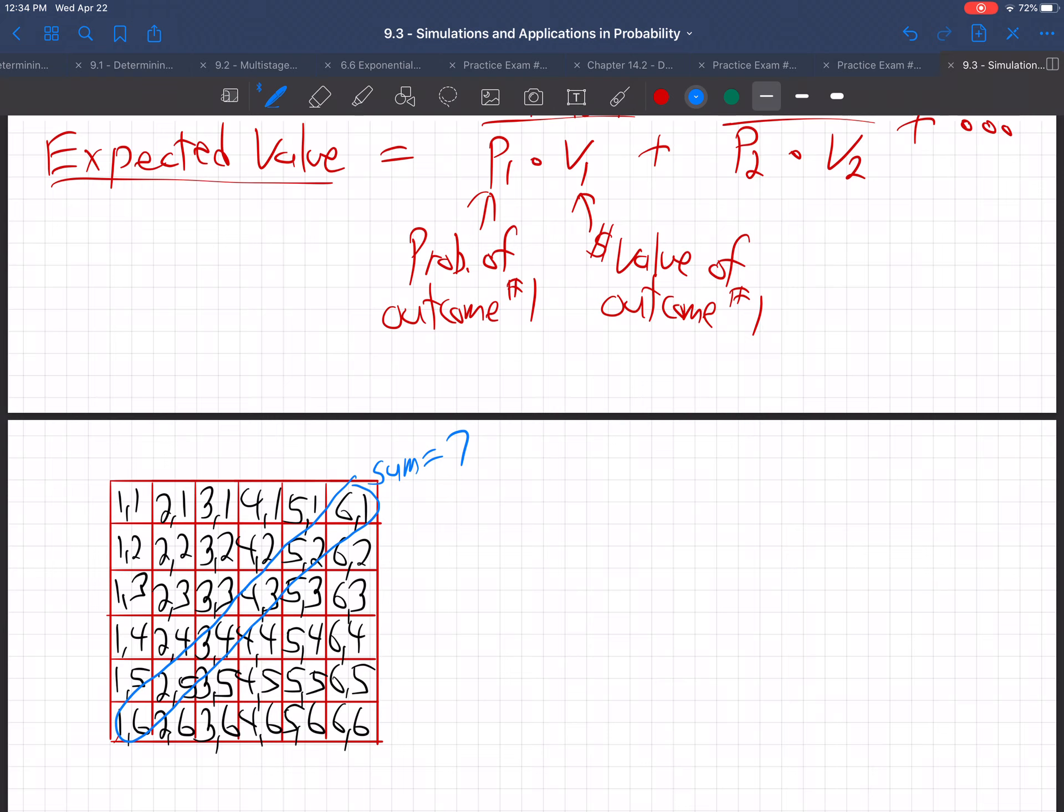See how they all add up to seven: six one, five two, four three, et cetera. The next diagonal, they all add up to eight. The next diagonal, they all add up to nine.